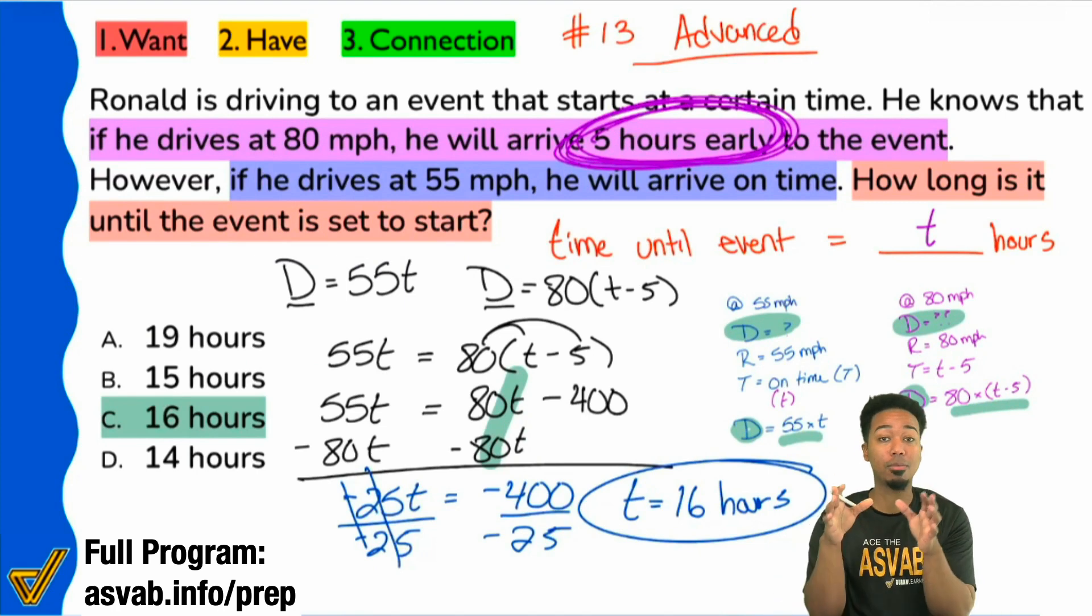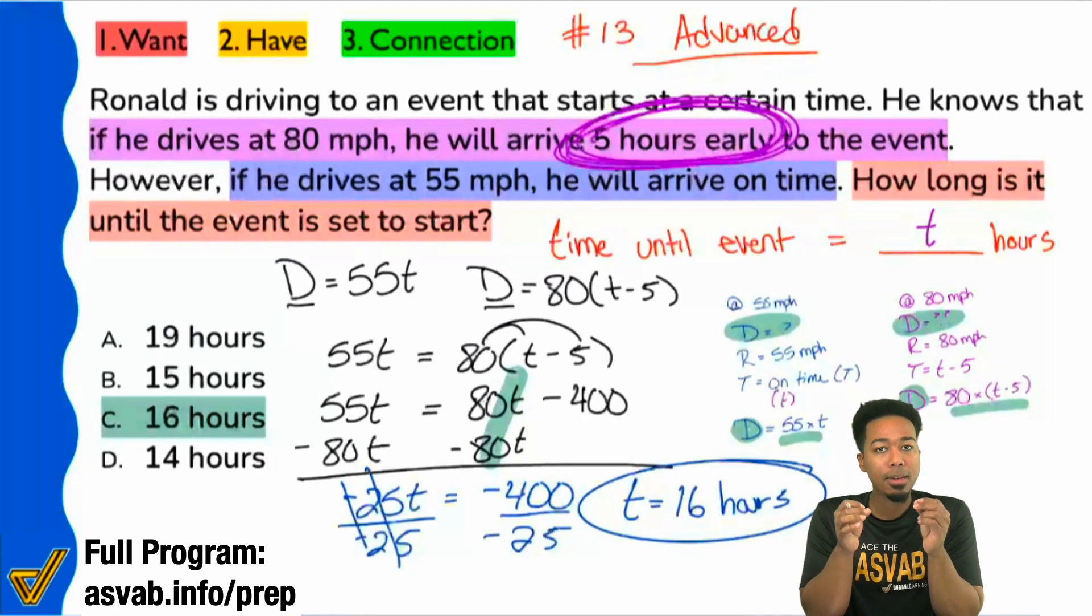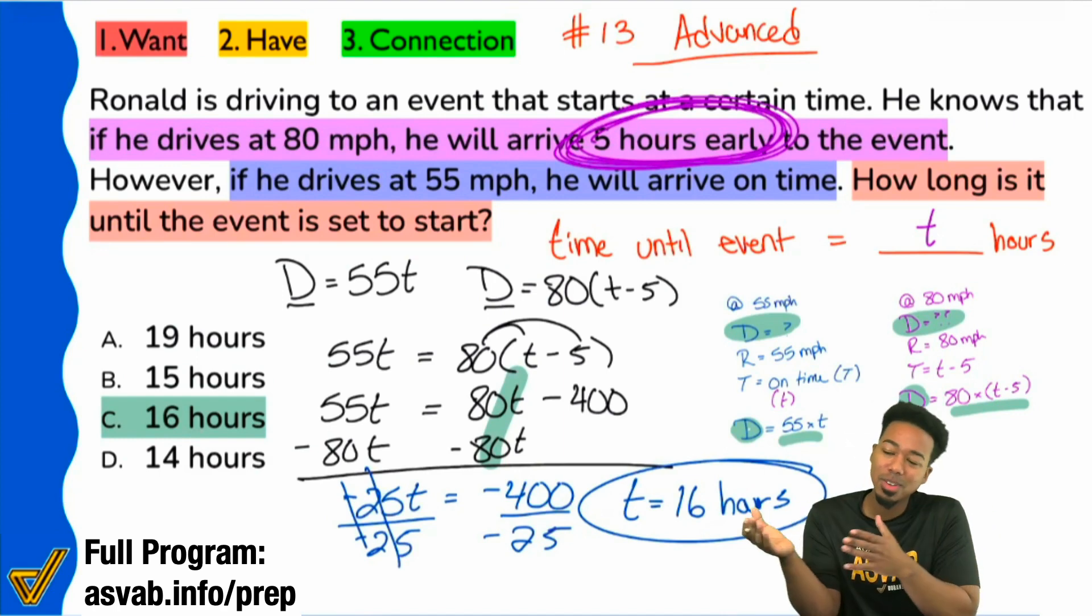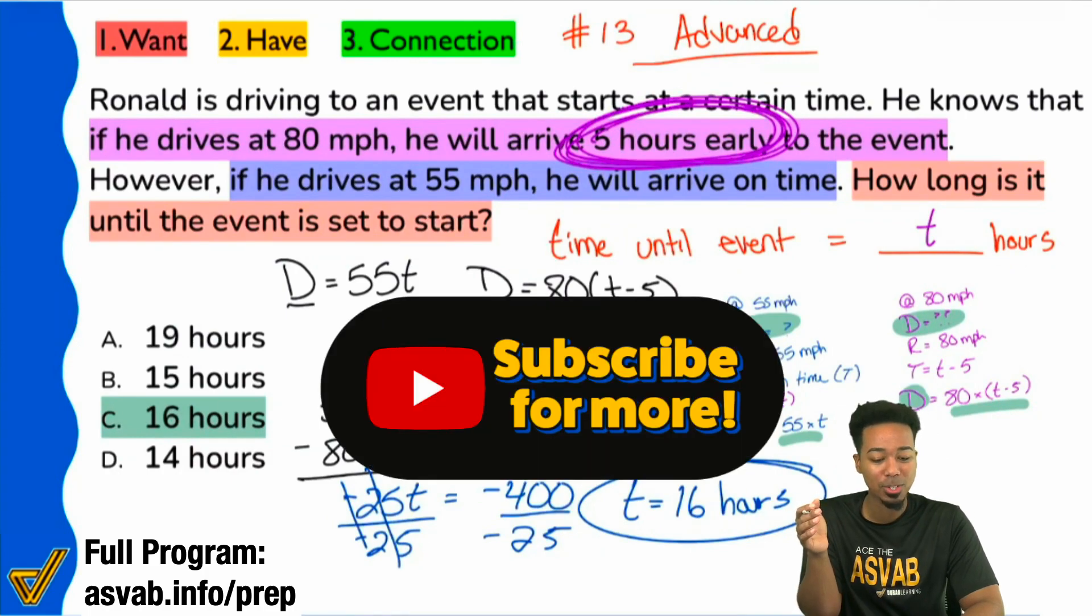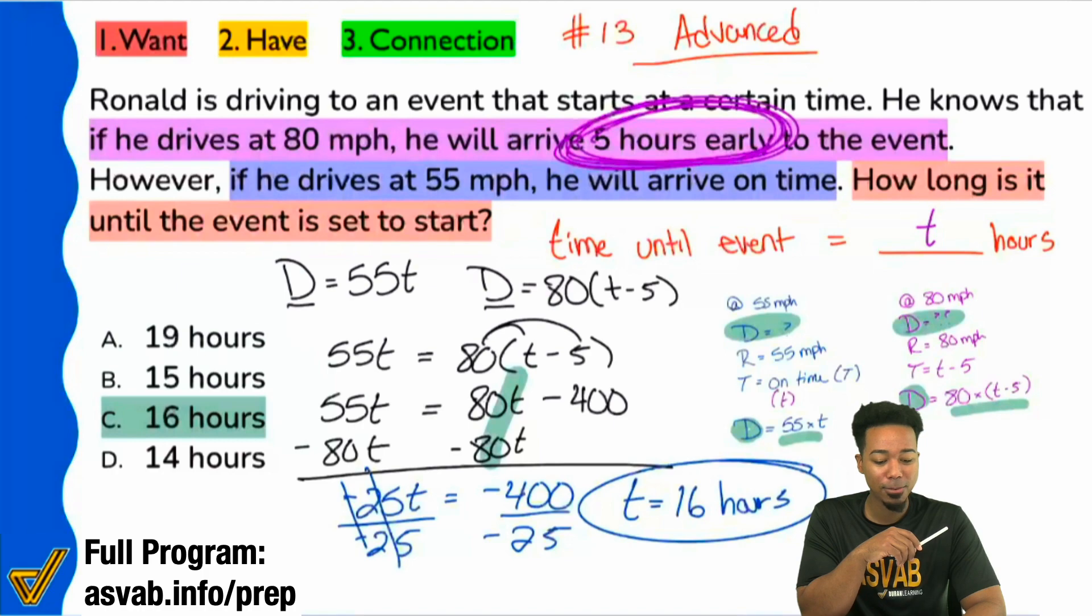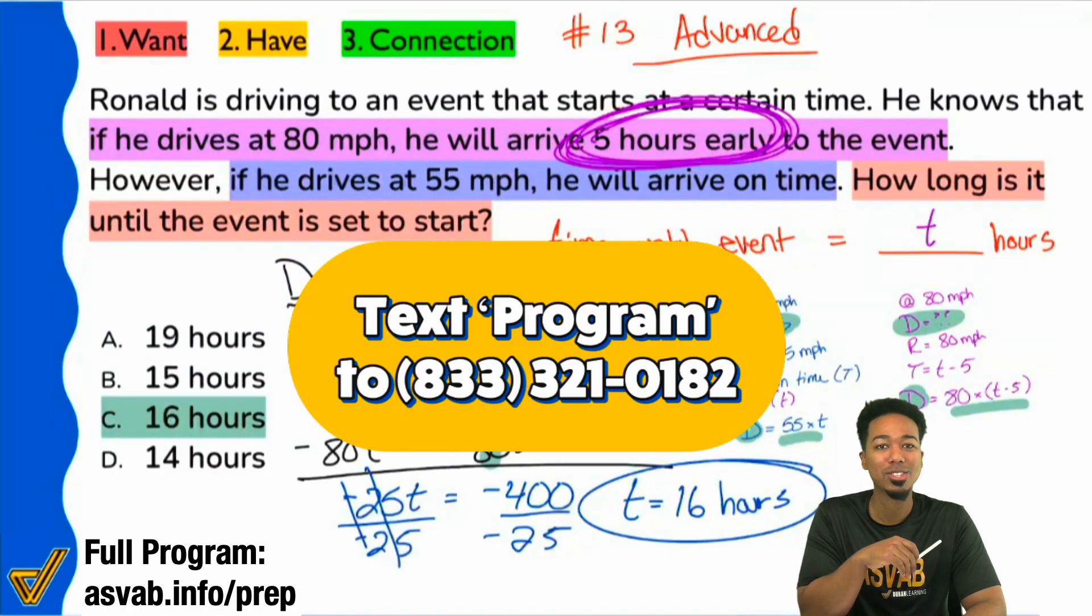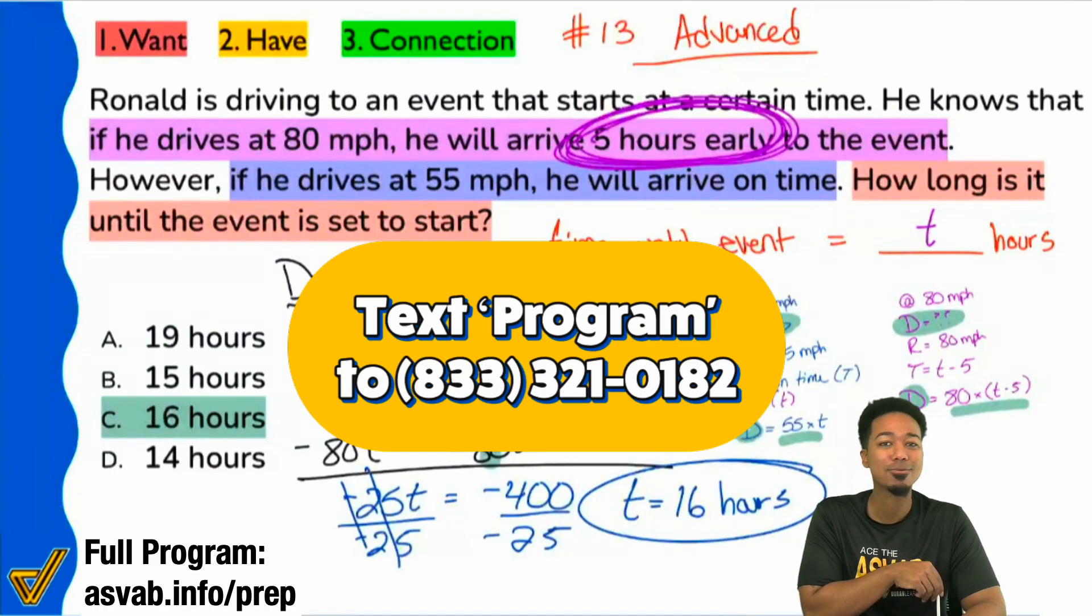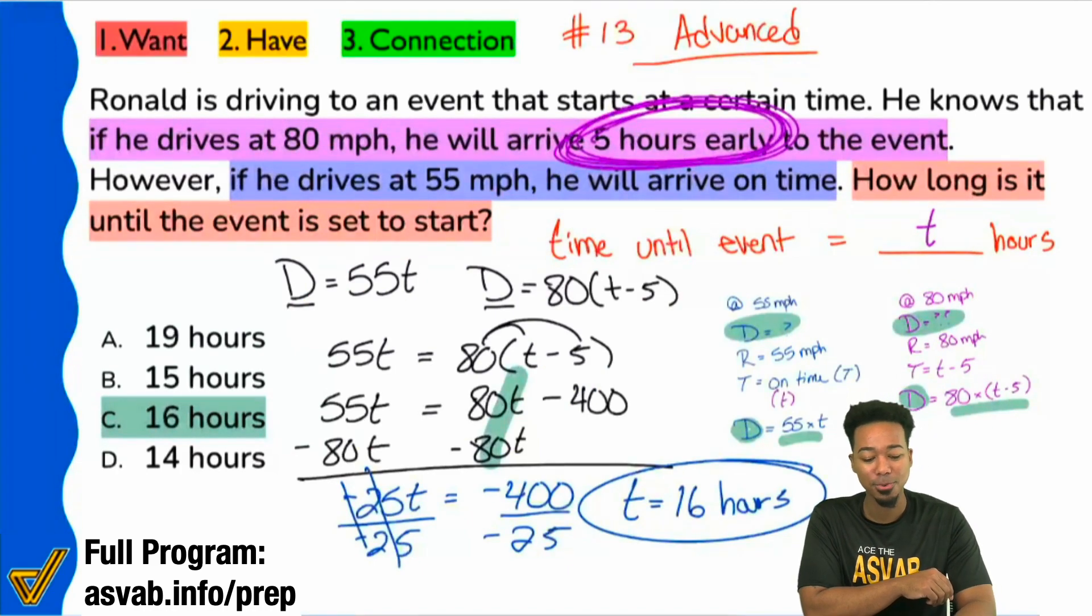Again, it's not an easy problem by any means, but if you've had the chance to practice distance rate time problems excessively, then this is going to be the next step that you want to look for. So as always, my party people, you know I love working with you. My name is Coach Anderson. If you did enjoy this video, go ahead and hit the like, go ahead and leave a comment if you learned anything new and then subscribe to the channel for more. And as always, if you're looking to learn more about our program, it's exactly how my students raise their scores and get the jobs they want. Go ahead and text program to 833-321-0182 and raise your score today. I'm Coach Anderson, and I will see you in the next video.